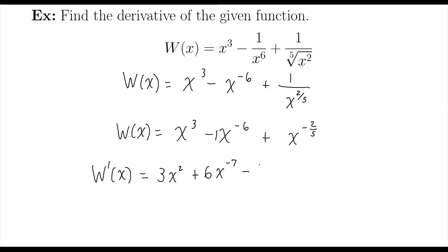Minus two fifths x. Subtracting one from the exponent, negative two fifths minus five over five is the same as negative seven over five.